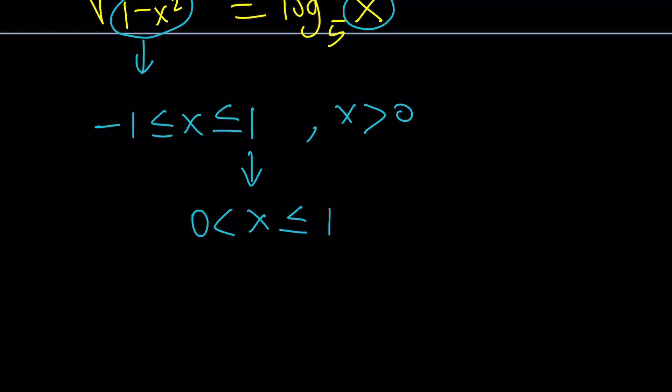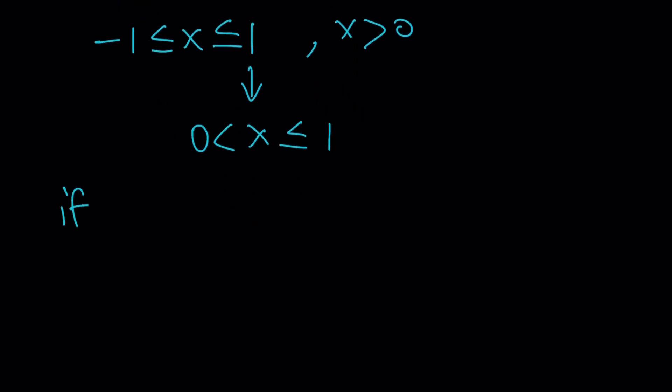So here's what we're going to do. First of all, if x is, we kind of have to think about something here. If x is less than or equal to 1, obviously it's positive. We know that, right? Then log x with base 5, of course, is going to be less than or equal to 0. Why? Because log 1 is 0.